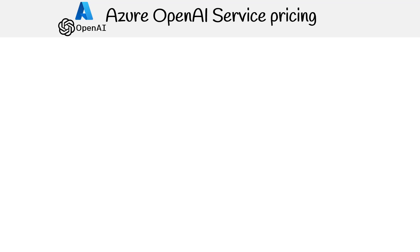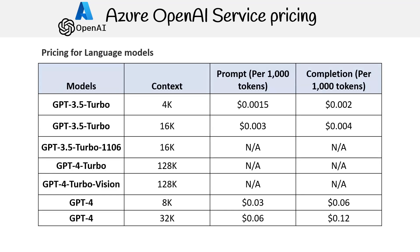Let's take a look at the pricing for the models in Azure OpenAI Service. Starting off with the language models, we have GPT-3.5 Turbo with a context of 4k tokens, costing $0.0015 for prompts and $0.002 for completions per 1000 tokens. Another version of GPT-3.5 Turbo can handle a larger context of 16k tokens, with prompt and completion costs increased up to $0.003 and $0.004 respectively.